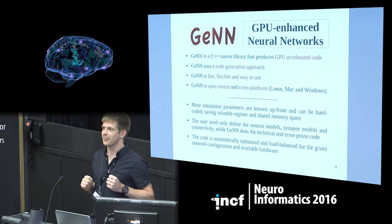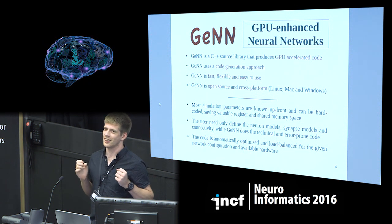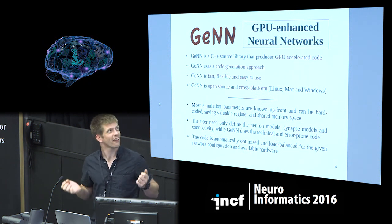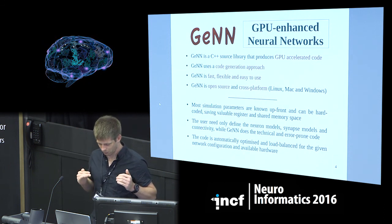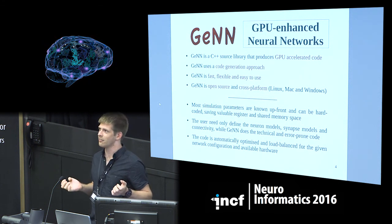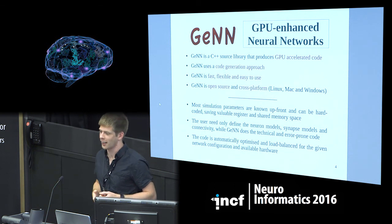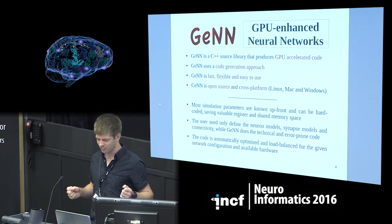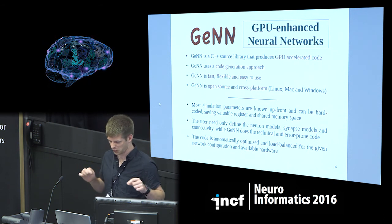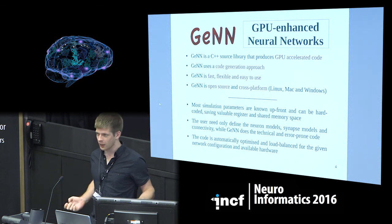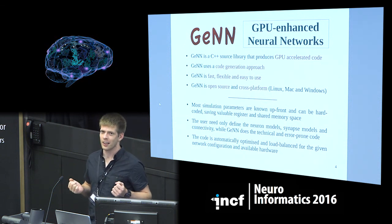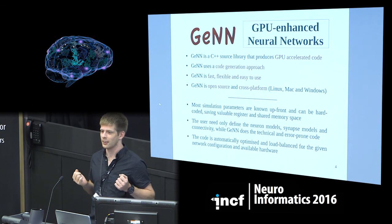The benefits of code generation: a lot of things can be calculated and fixed up front rather than being recalculated repeatedly during the simulation, which saves performance. Also, the user only has to deal with defining the important things like neural models and synapse models — you don't have to worry about how much memory should be used. Another good thing is that the code is automatically optimized for the given hardware and network configuration the user is using.